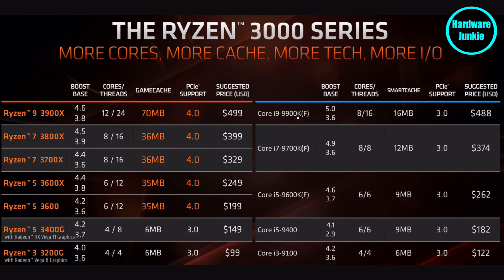Now let's move over to the Intel side. The letters on the end of Intel CPUs vary more than AMD's and have more subtleties. Starting with the Core i9-9900K — this is a KF variant. What K means for an Intel CPU is that it has an unlocked multiplier, meaning you're able to overclock your CPU. Basically, you can increase how many times your CPU cycles per second — taking those clock speeds up to 5.1 or 5.2 GHz for more performance. You do not get this option on a chip without a K at the end.